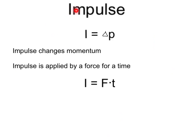Both the haystack and brick wall provide my car with an impulse. That impulse provided by the brick wall or haystack will change my car's momentum. Impulse changes momentum. And how does an impulse change momentum? It's applied by a force for a time. Impulse equals force times time.